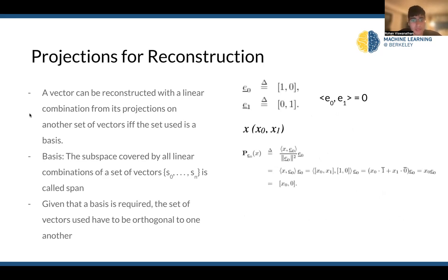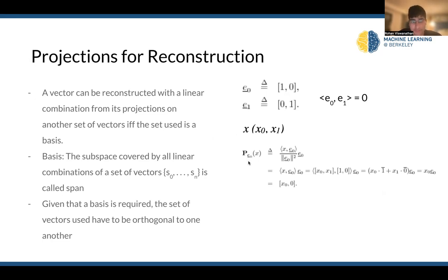For projections for reconstruction: a vector can be reconstructed with a linear combination from its projections onto another set of vectors if and only if the set used is a basis. For those of you who have taken Math 54, 16A and B, or EECS 127, the basis is a subspace covered by all linear combinations of vectors, where the set of vectors S0 to Sn is called the span. By defining a subspace of certain vectors, linear combinations of these vectors can form any vector in the vector space I'm interested in.